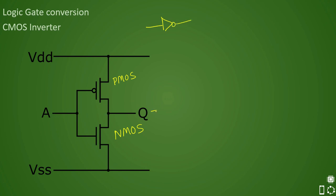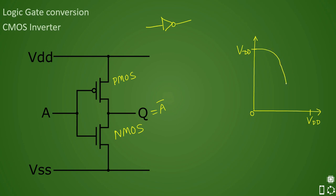So Q will always be A-bar. VDD is your power and VSS is your ground. This is the basic construction and circuitry-level symbol of CMOS. Looking at the graph, the X-axis represents input voltage and the Y-axis represents output voltage — these are the output characteristics. We are going to explain the different regions, the levels of voltages, and how the inverter performs.